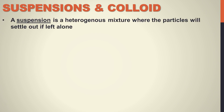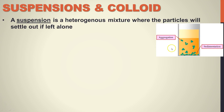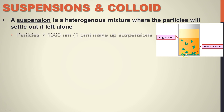We have suspensions and colloids. A suspension is a heterogeneous mixture — so we're not talking smoothly mixed; we're getting clumps where particles will settle out if you leave them alone. We can see very large particles that will aggregate and clump near the bottom. Any particle larger than a thousand nanometers — about one micrometer — will start making up suspensions.